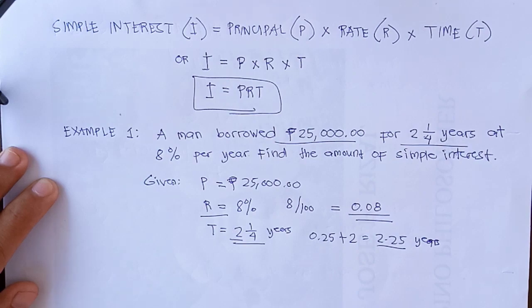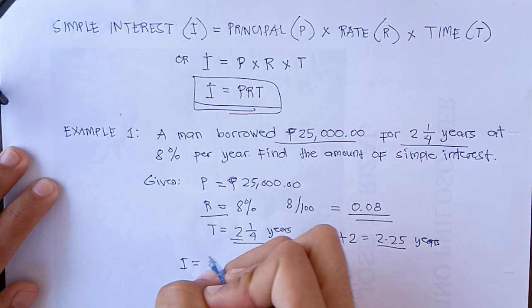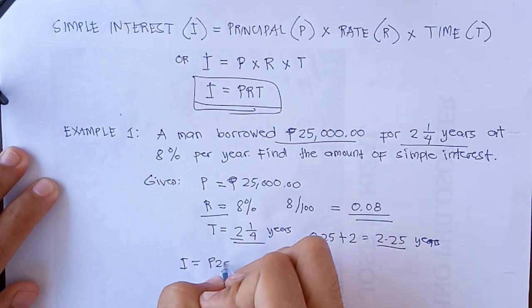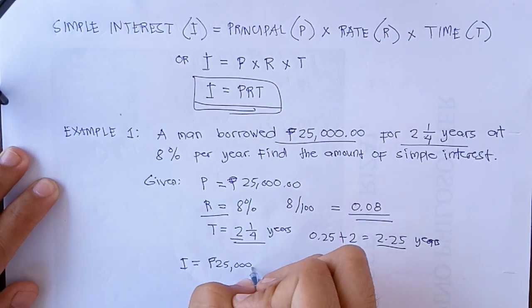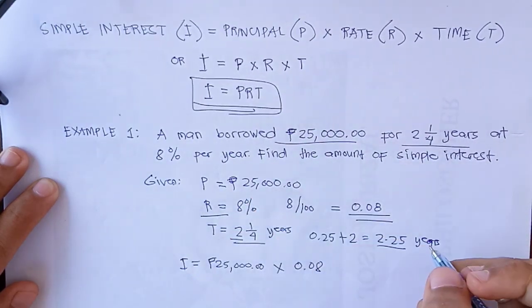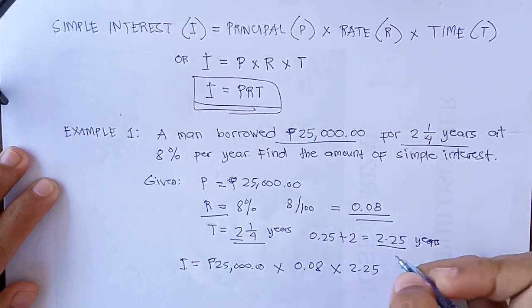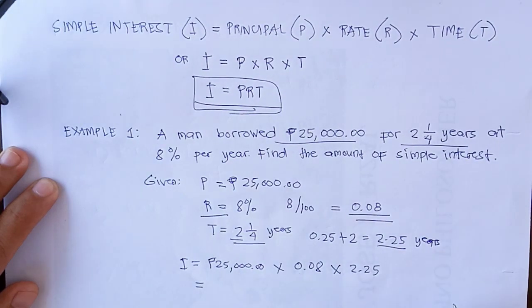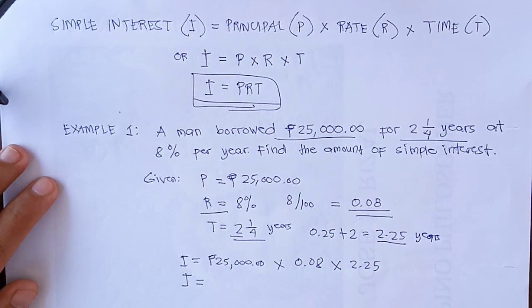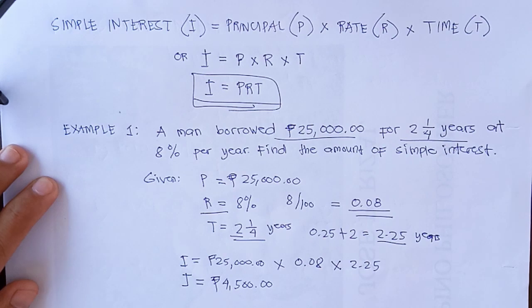After that, substitute the values in the formula. Our formula is I equals, our principal is 25,000 times 0.08 as the rate or the interest rate, and the time we have 2.25. So this is equal to, our simple interest is equal to 4,500 pesos.